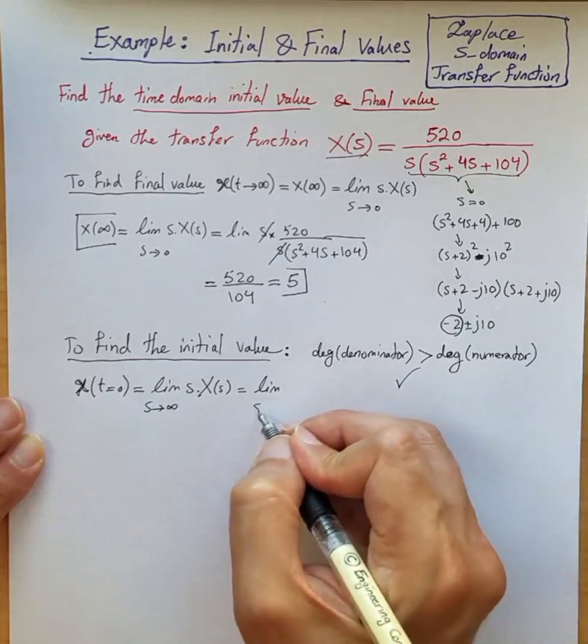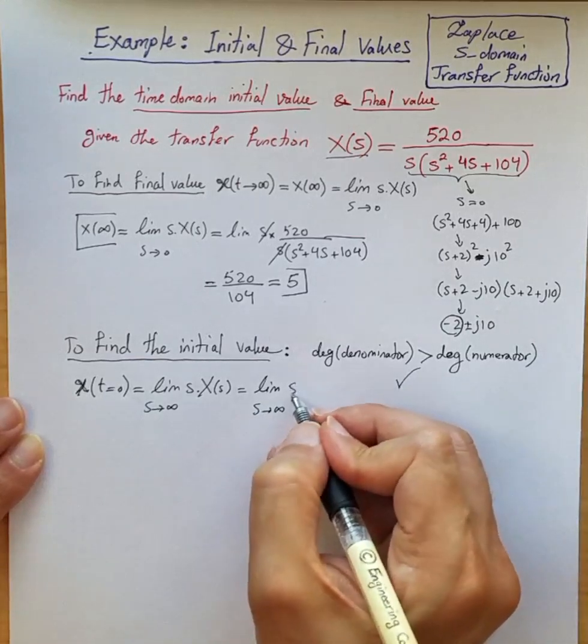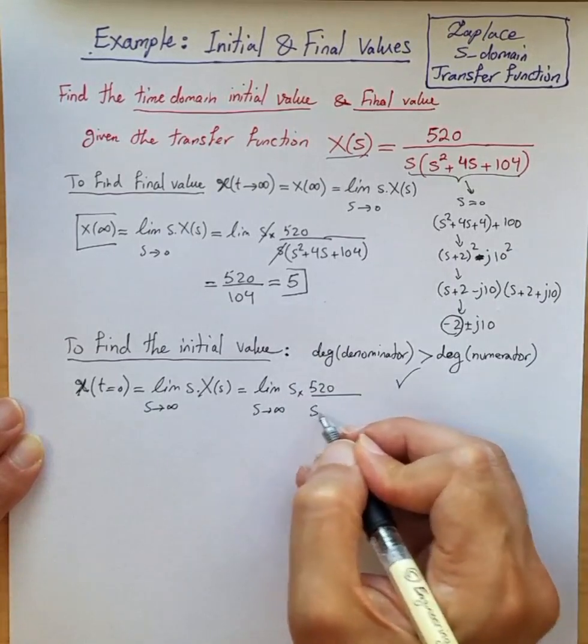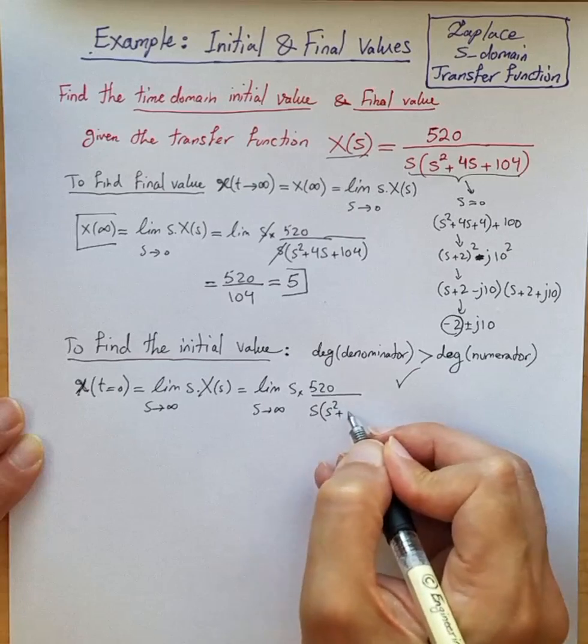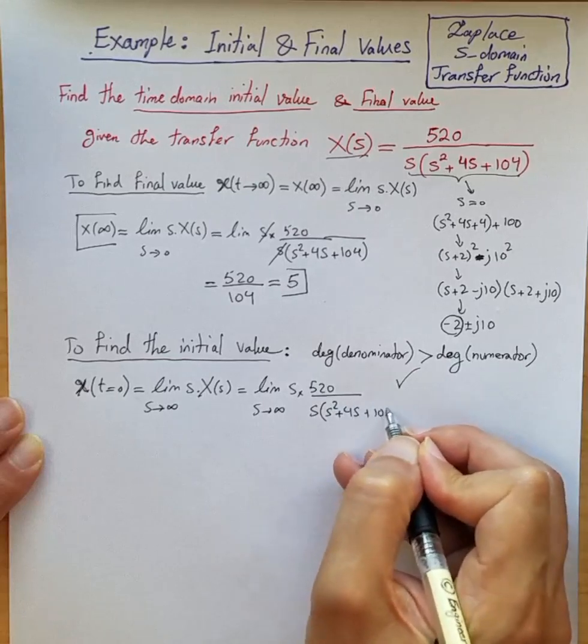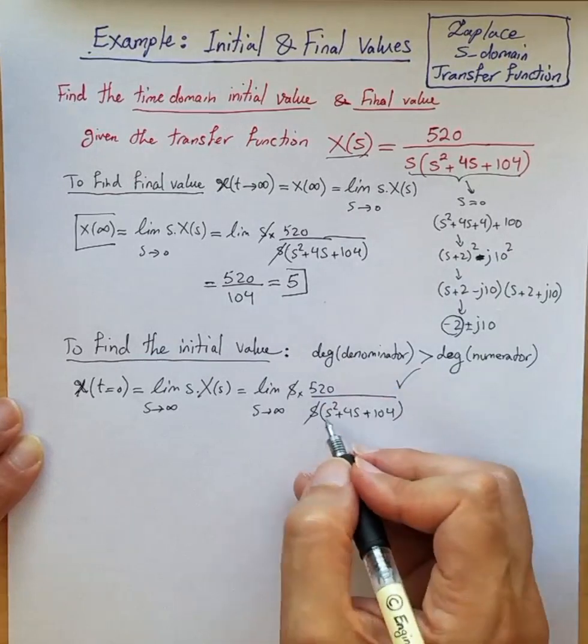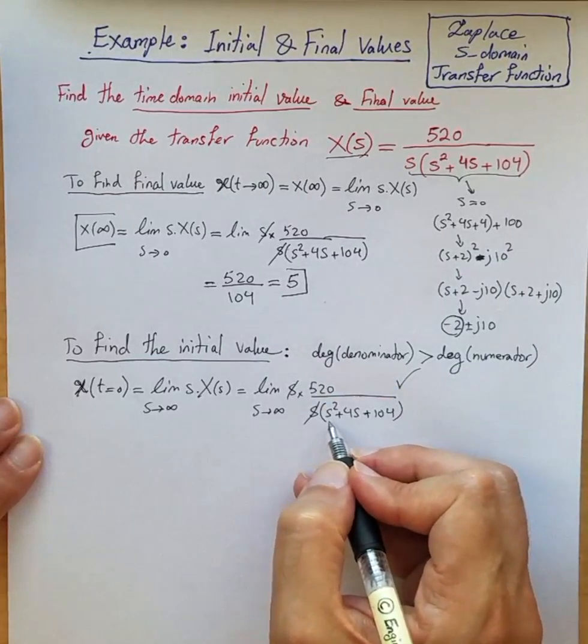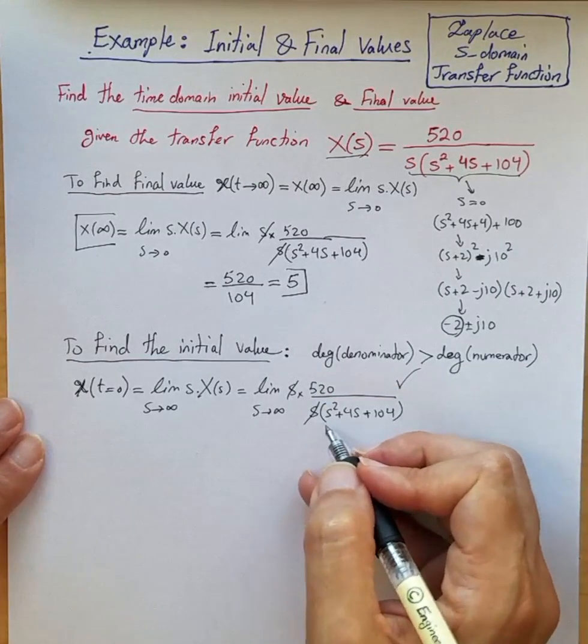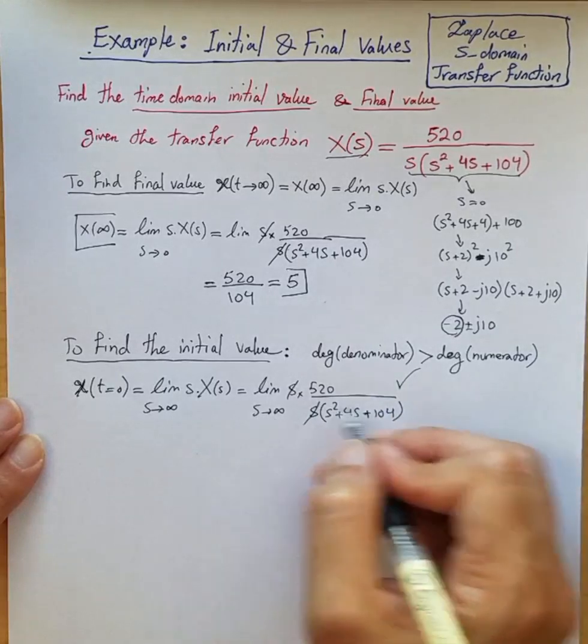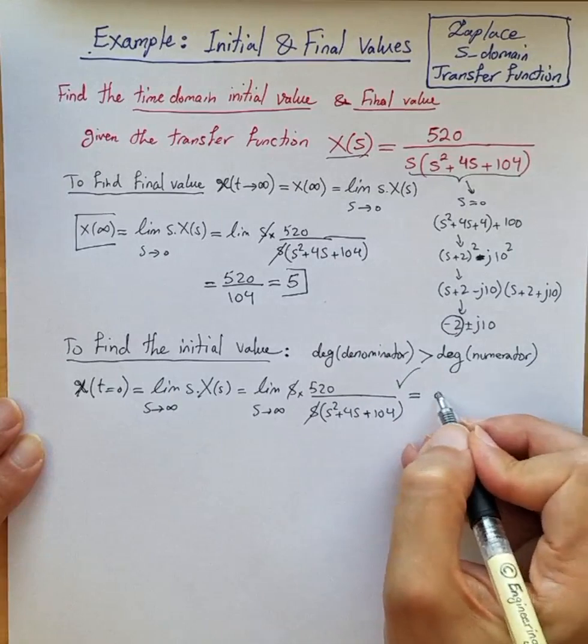So in this case, the limit as s goes to infinity of s·520 divided by s(s²+4s+104)—the s terms cancel out. And then you can see that since the denominator has higher order than numerator, when s goes to infinity the denominator goes to infinity, so the whole thing goes to zero.